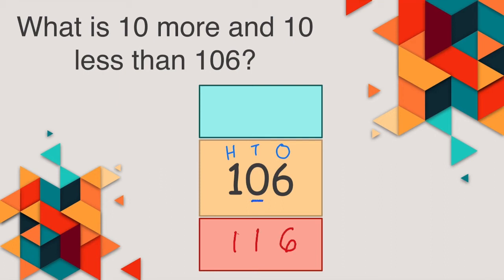The hundreds digit and the ones digit would remain the same. So 10 more than 106 would be 116. We only change the tens digit. Now, what is 10 less than 106? Confusing, right? Because we have a 0.